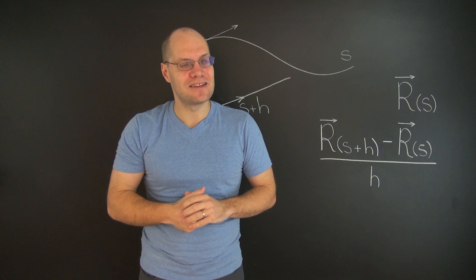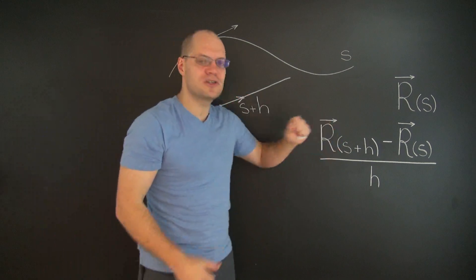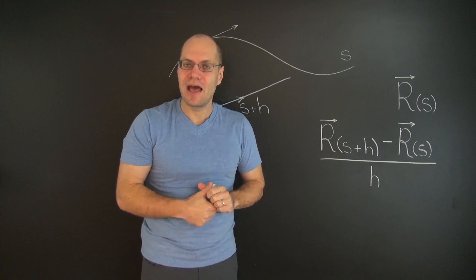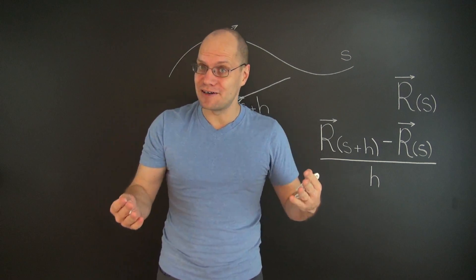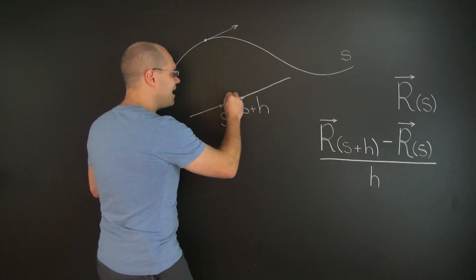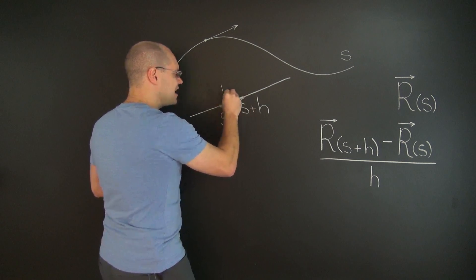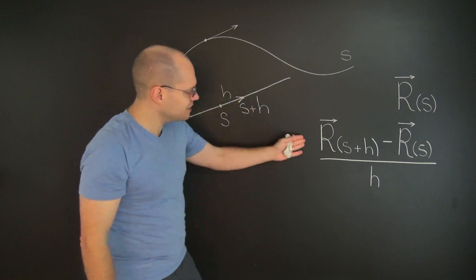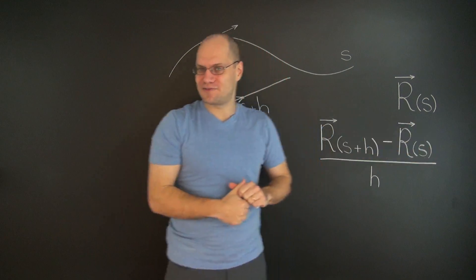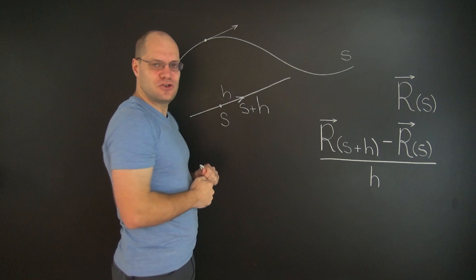Well, of course its length is precisely h because s corresponds to arc length. A change of h in the parameter, which is arc length, corresponds to moving a distance of h from this point. So the length of this vector is h. So the length of the vector in the numerator of this fraction is h for all h at this zoom level.